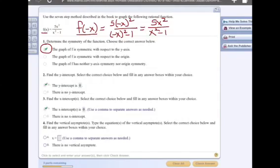Next, we want to find the y-intercept. We plug in 0 for x and find what the y-value is. So f of 0 is 5 times 0 squared over 0 squared minus 1. Since that gives us 0 in the numerator and negative 1 in the denominator, that means we get a y-value of 0. So the y-intercept is 0.